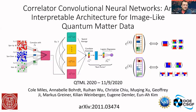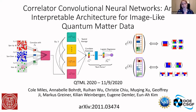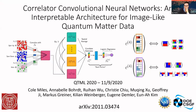Another question is asked about the network interpolating between the localized and delocalized states — does the network learn some physics or is it an abstract interpolation? Annabelle explains that this is basically what Cole's talk is about for the Fermi-Hubbard model: Cole found a way to extract which correlations the network uses to make its decision. In principle, the same method should be applied to the MBL localized/non-localized phase to find out what physics the network has learned.